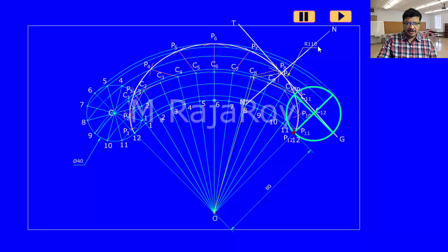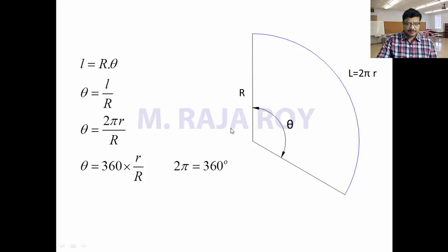In this way epicycloid is generated. Now I will explain how to draw this. Before drawing the epicycloid, observe this small concept: here, to find out the arc length of the directing circle, you have to use the popular formula L = Rθ.